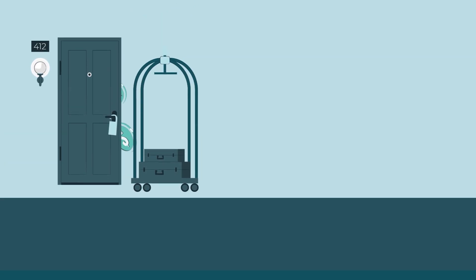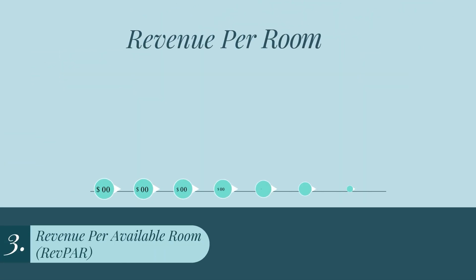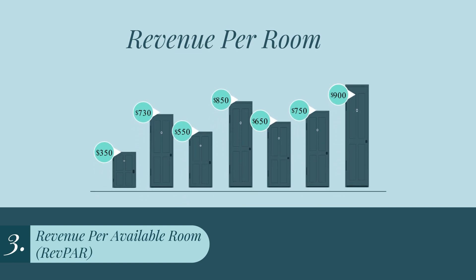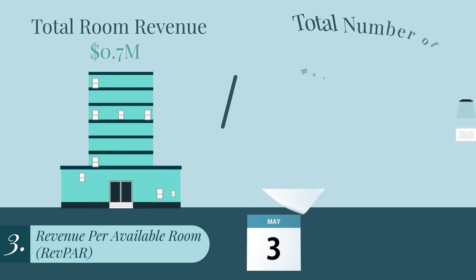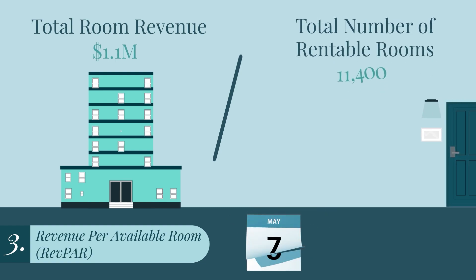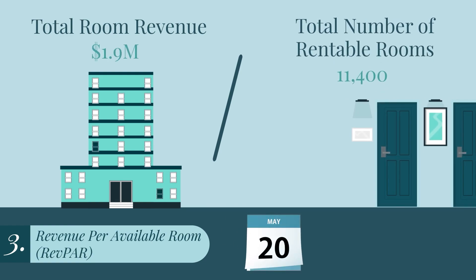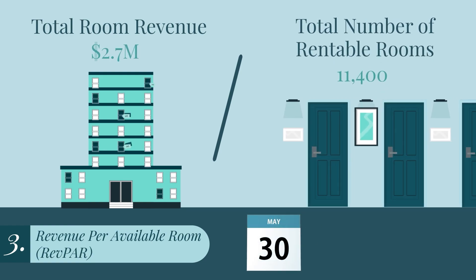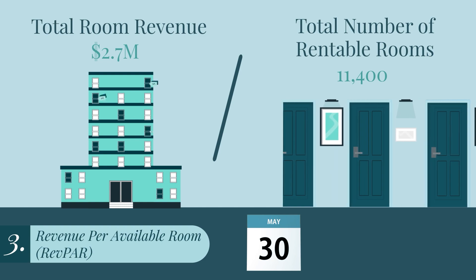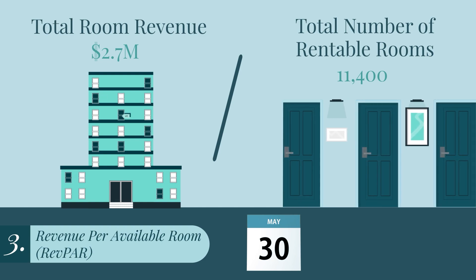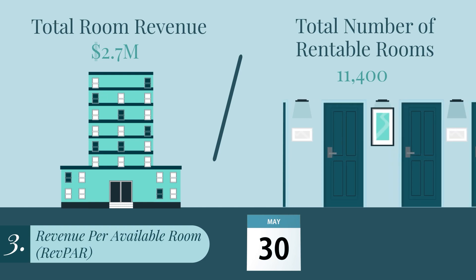Next is the revenue per available room. This measures how much revenue each rentable room in the hotel generates. We calculate this by dividing total room revenue by total number of rentable rooms. A hotel's REVPAR is particularly useful because it takes into account both occupancy rate and ADR.